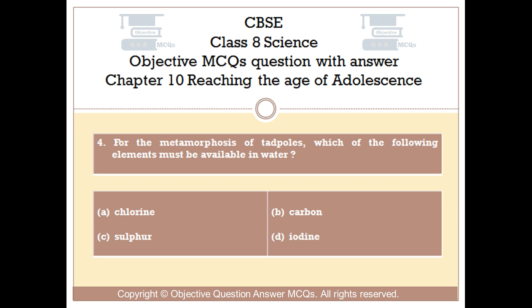Question number 4. For the metamorphosis of tadpoles, which of the following elements must be available in water? Option A chlorine. Option B carbon. Option C sulfur. Option D iodine.